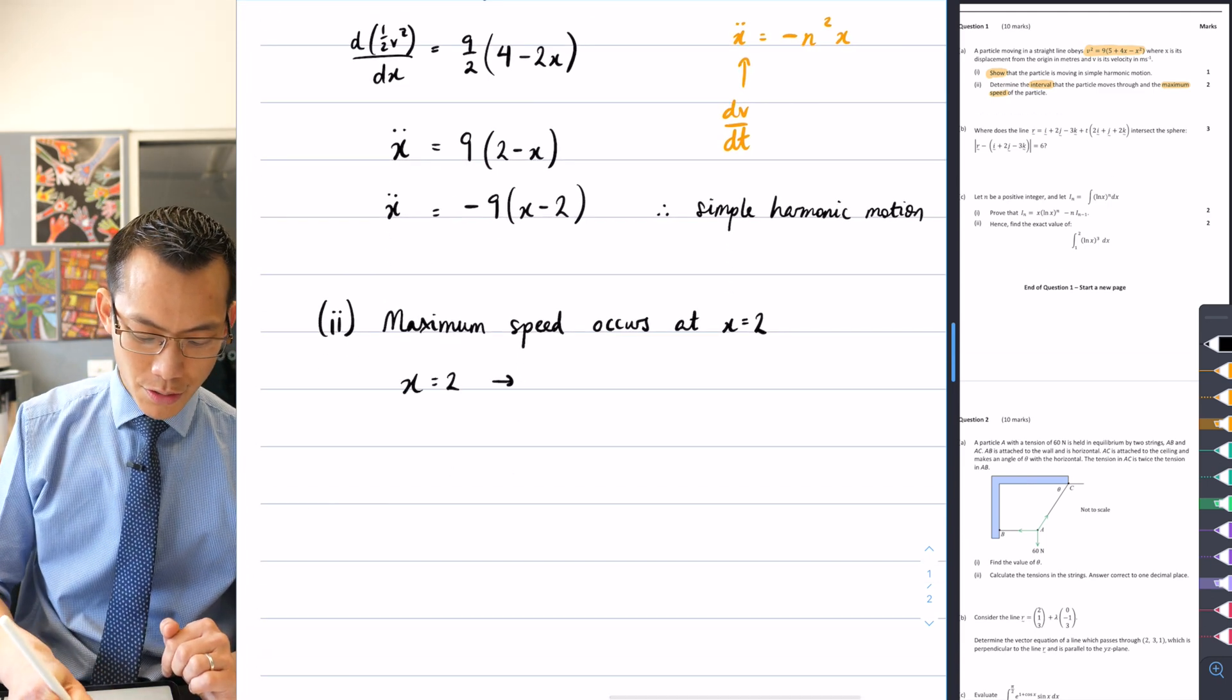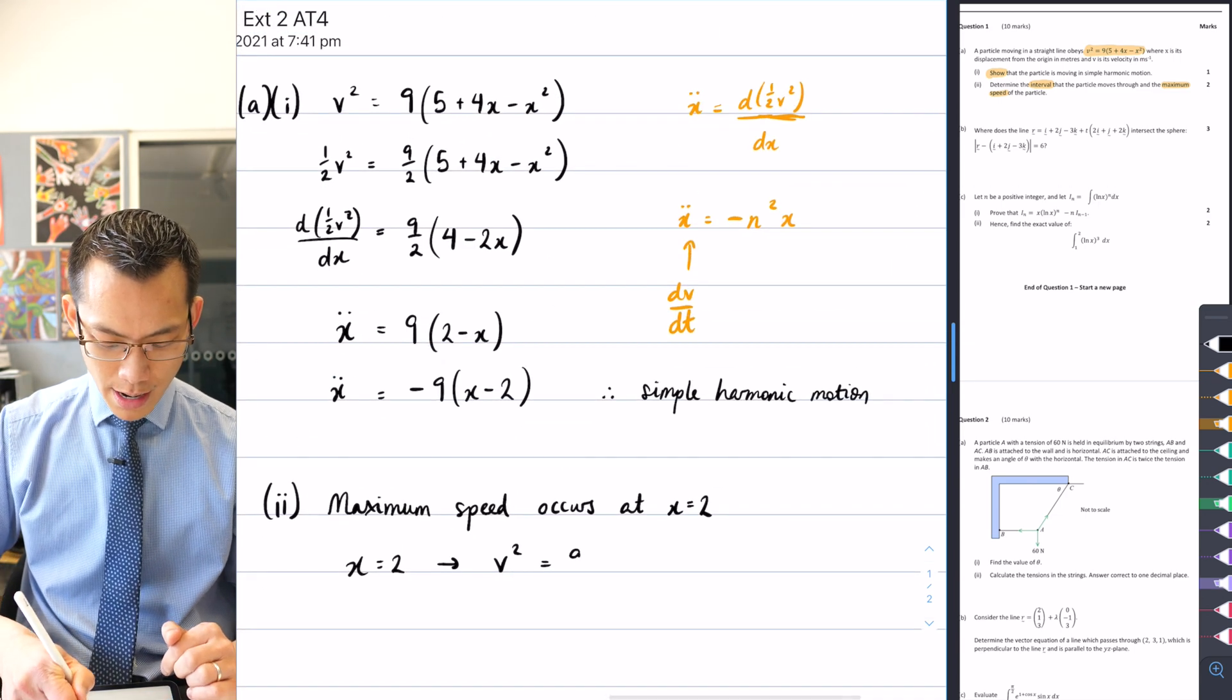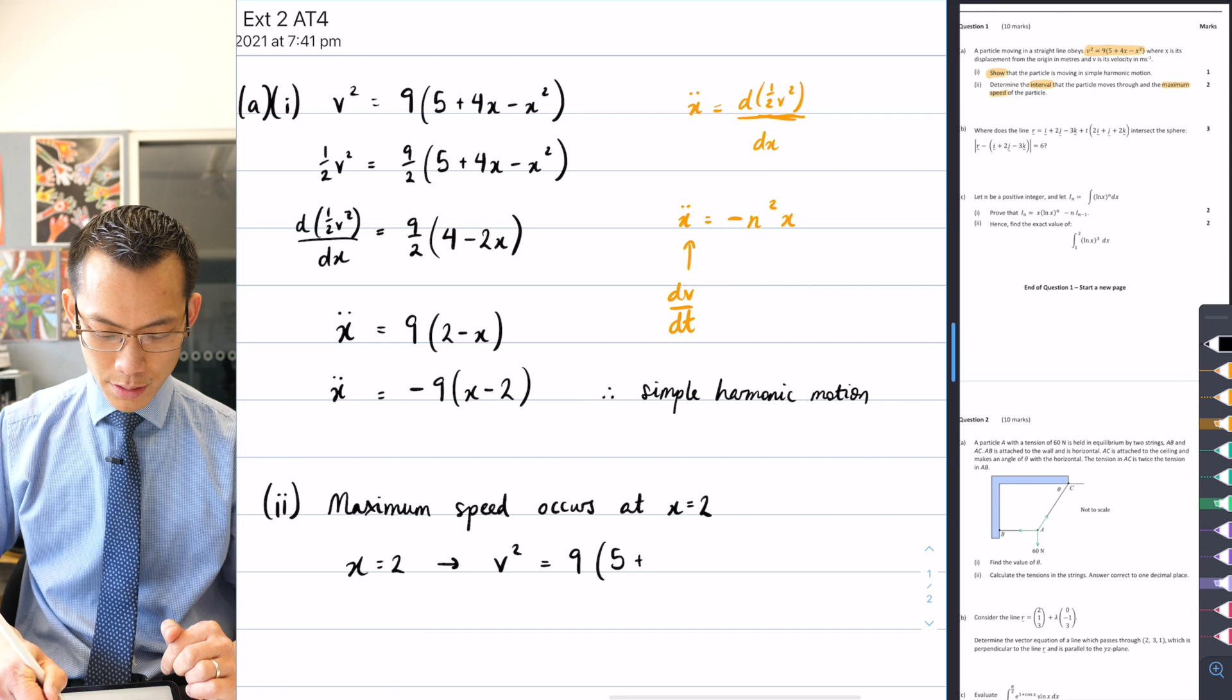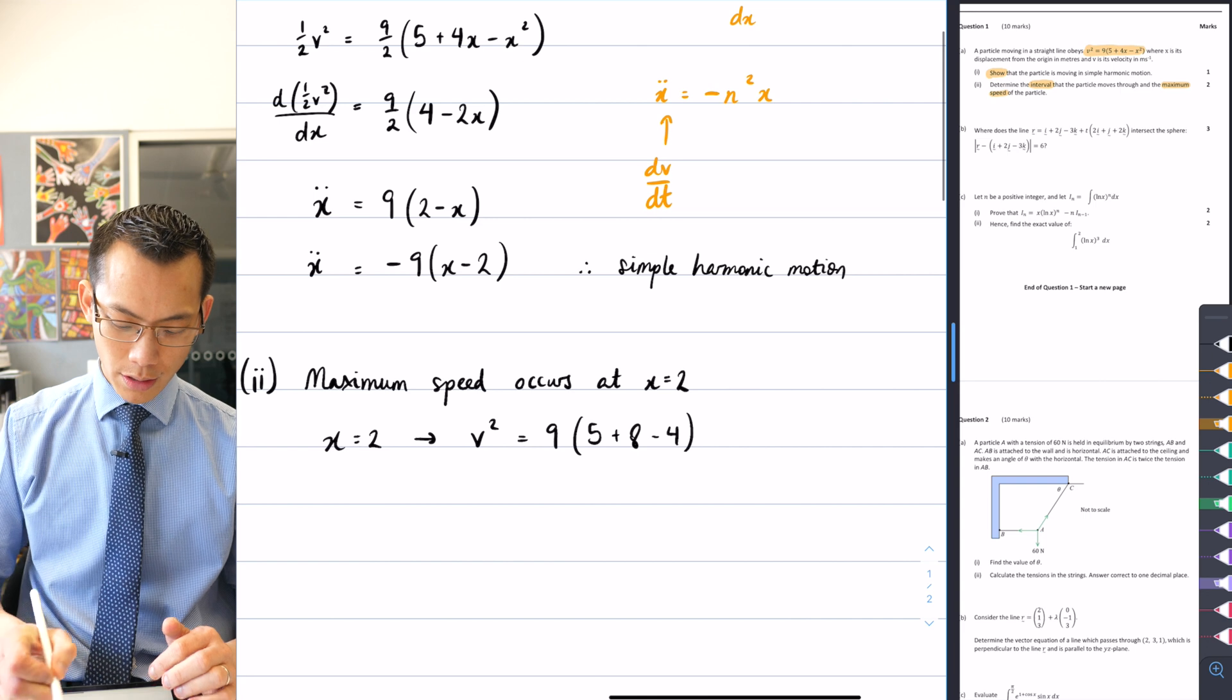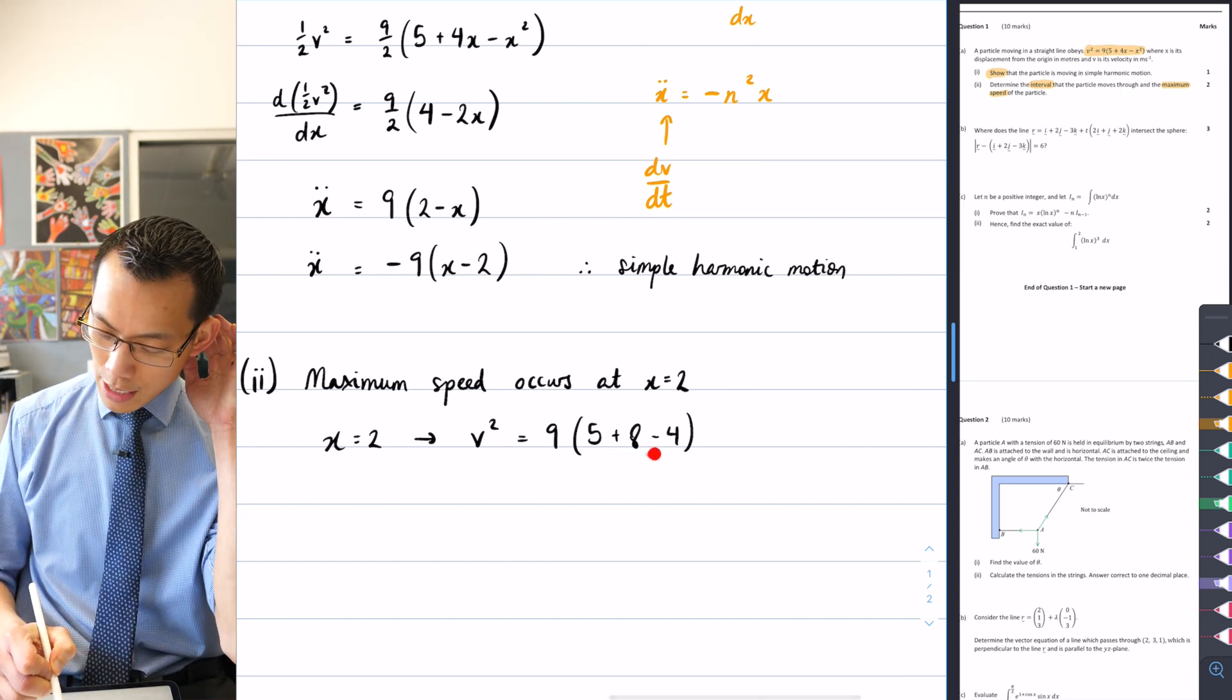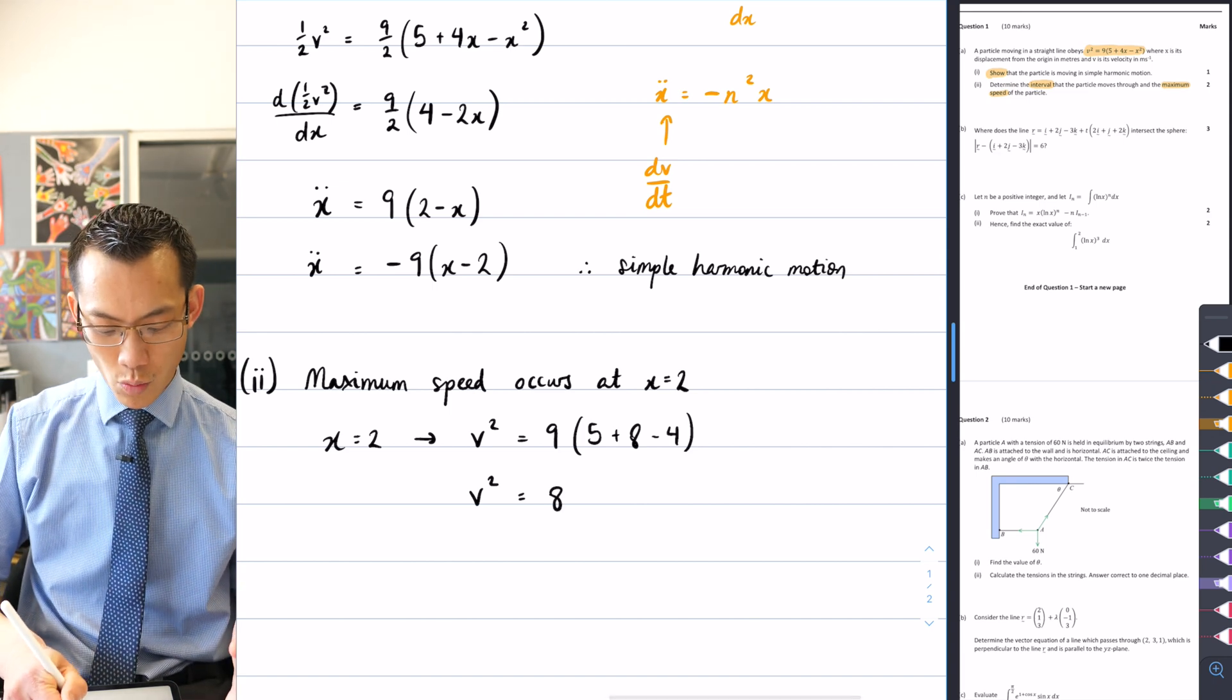x equals 2, when I substitute that into the v squared equation, you can see there's going to be a 9 out the front, and then I've got 5 plus 4 times 2 is 8, 2 squared is 4. When I have a look at this, this is 13, take away 4 is 9, so I'm getting v squared equals 9 times 9, which is 81.